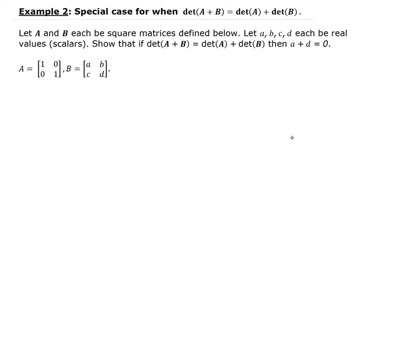If this statement is true, then that implies we want to show that A plus D is equal to 0, where A and D are real values. This statement is an if-then statement, so just recall that this statement is in the form of P implies Q, where P is this and Q is this statement.